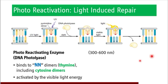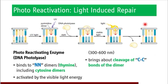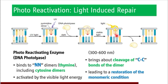The DNA photolyase, activated by visible light energy, brings about cleavage of the carbon-carbon bonds of the dimer. It cleaves the CC bonds of the dimer, and once those CC bonds are cleaved, it leads to a monomeric condition of the DNA template — the monomeric condition is restored. This was regarding photoreactivation or light-induced repair through the agency of DNA photolyase.